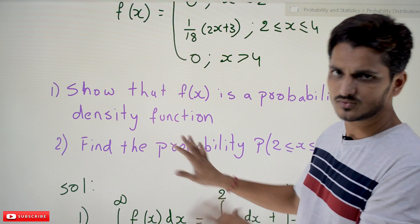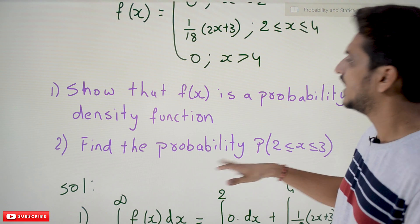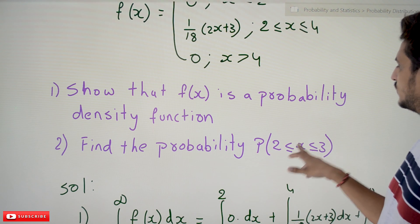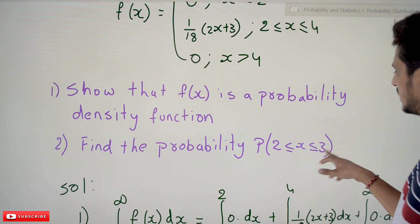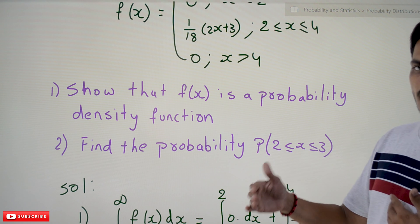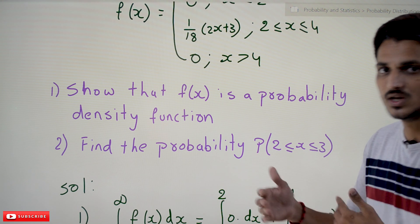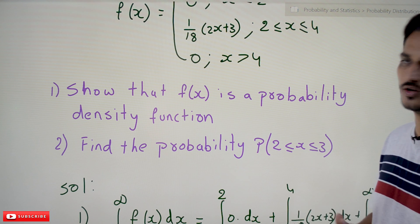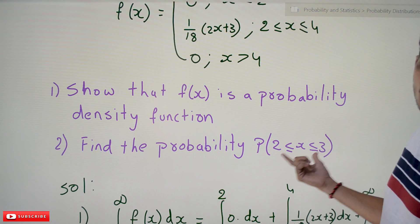For practice, we are doing two things: first, show it is a PDF, and second, find the probability P(2 ≤ x ≤ 3) — that is, what is the probability value you get for the limits 2 to 3.